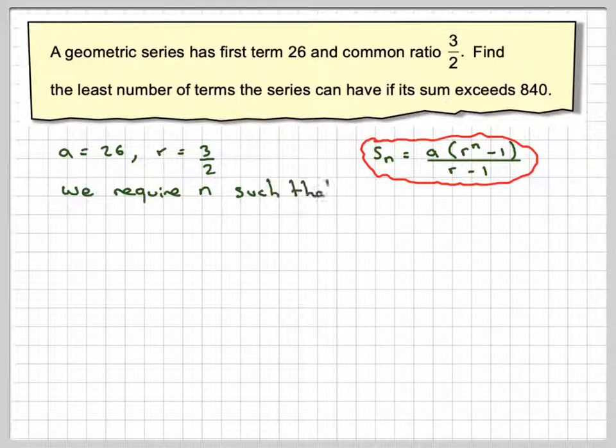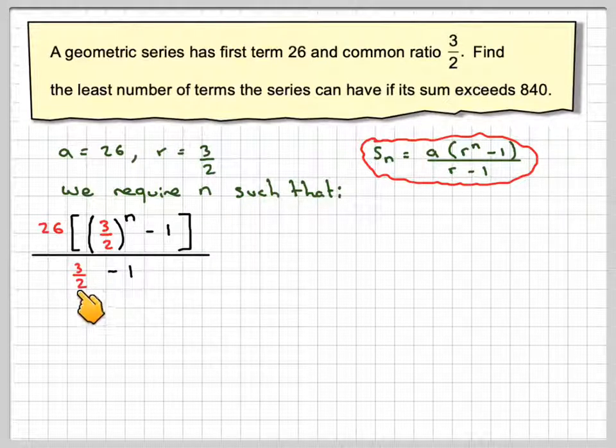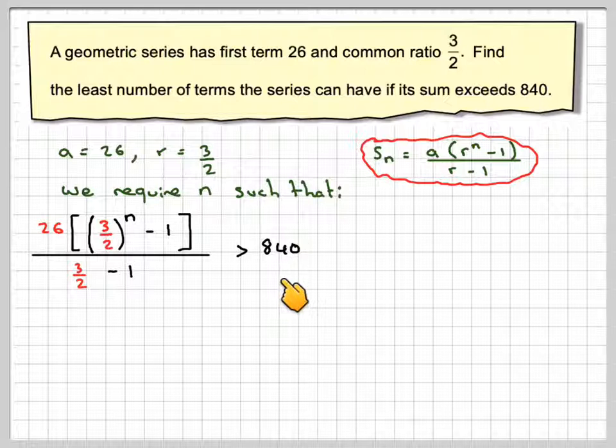So we're going to require n such that the first term, 26, times the common ratio to power n minus 1 over the common ratio minus 1, so that's 3 over 2 minus 1, must be greater than 840.